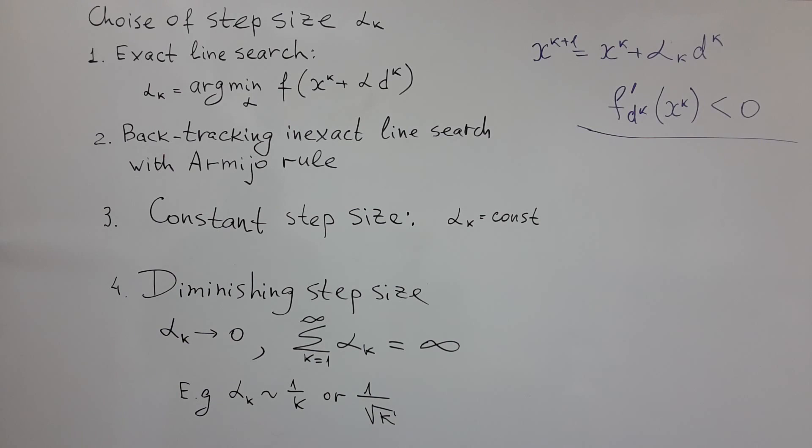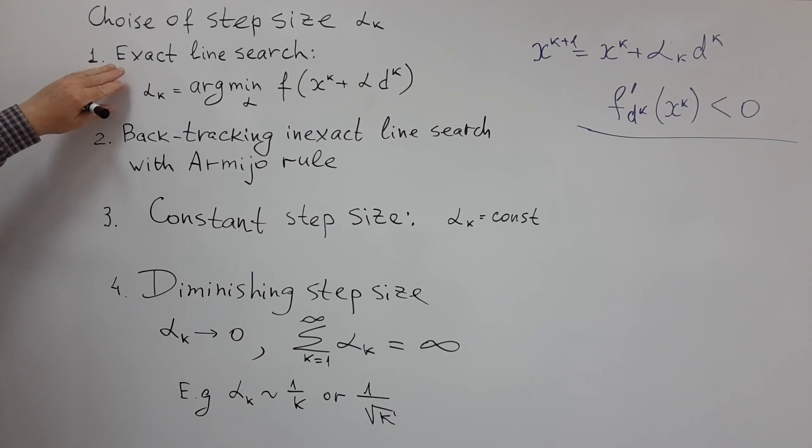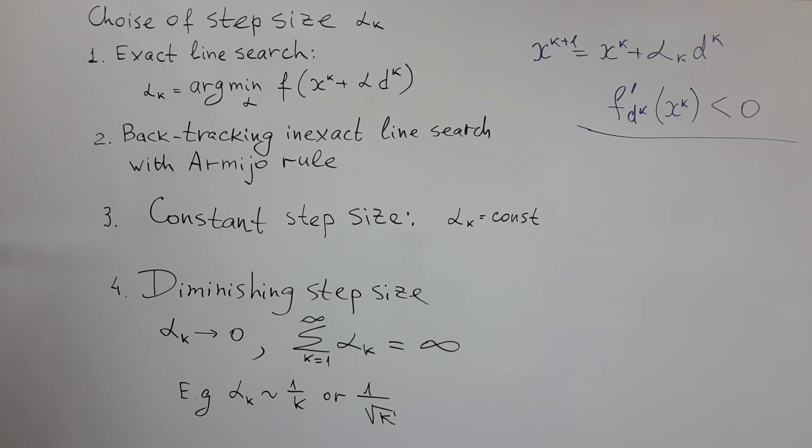Let us summarize possible choice of step size in line search method. Like we already learned, exact line search, exact minimization with respect to alpha, backtracking line search with Armijo rule.